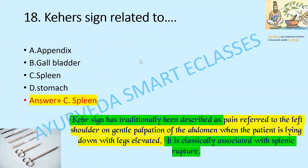Kehr's sign is related to the spleen. It has traditionally been described as pain referred to the left shoulder on gentle palpation of the abdomen, with the patient lying down with legs elevated. It is classically associated with splenic rupture.